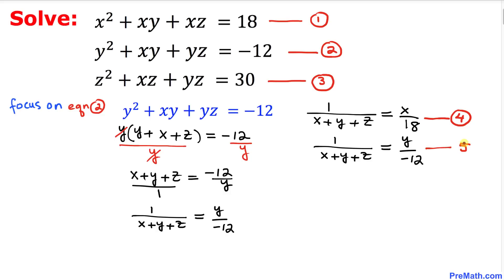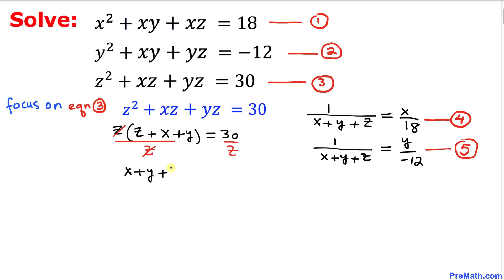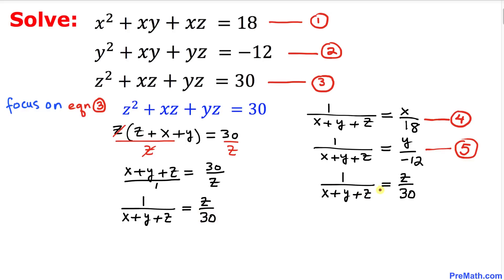Finally, let's focus on equation three. On the left-hand side z is in common, so I factor z out: z times (z plus x plus y) equals 30. Dividing both sides by z and flipping, we get 1 over (x plus y plus z) equals z over 30. I'll call this equation number six.